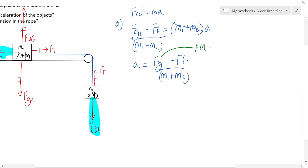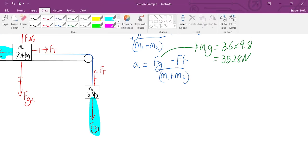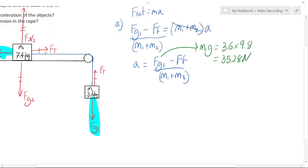which is 3.6 times 9.8. And that's equal to 35.28 newtons. So that is representing the downwards force Fg1. And let's take a look at another component force here.